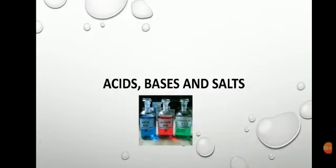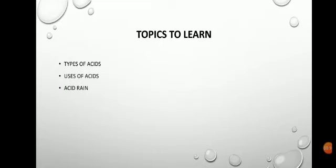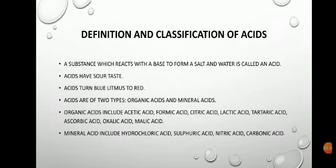Hello students, today we are going to discuss the second part of the chapter 'Acids, Bases and Salts.' We will learn what is an acid, the types of acids, the uses of acids, and acid rain and the damage it causes. Let's start with the definition: a substance which reacts with a base to form a salt and water is called an acid — that is actually a neutralization reaction, which we will discuss later.